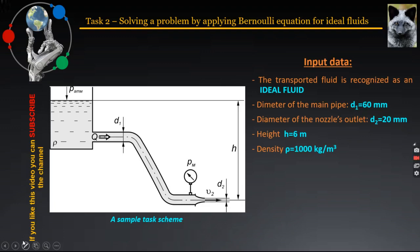Since the transported working fluid is cold water, its density will be equal to 1000 kg per cubic meter. As in the previous video tutorial, I suggest you now perform the preliminary step — the so-called step 0 — related to the conversion of parameters into their basic measuring units. In this case, these are only the diameters D1 and D2, and their conversion is presented on the slide.